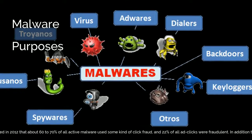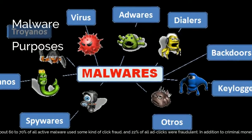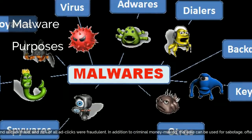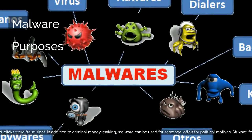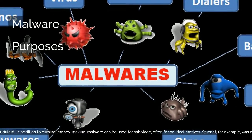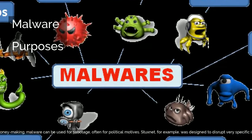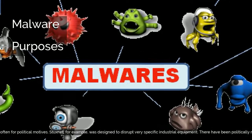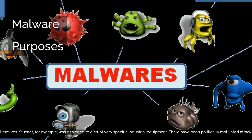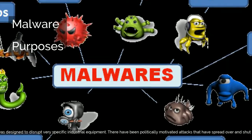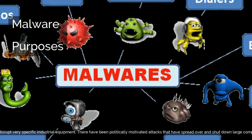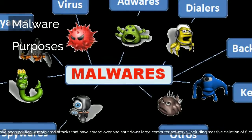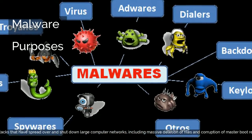In addition to criminal money-making, malware can be used for sabotage, often for political motives. Stuxnet, for example, was designed to disrupt very specific industrial equipment. There have been politically motivated attacks that have spread over and shut down large computer networks, including massive deletion of files and corruption of master boot records, described as computer killing.